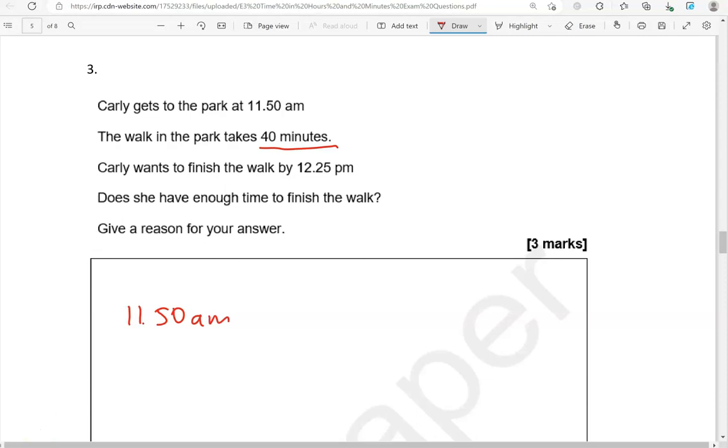So Carly gets to the park at 11:50 AM. We need to add 40 minutes to that. What I'm going to do is add 10 minutes first because that's what we need to get to 12 PM, since there are 60 minutes in an hour. So if I add 10 minutes, this will take us to 12 PM. So I've done 10 minutes here. I now need to add another 30 because 10 and 30 gives us 40 minutes.